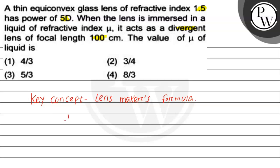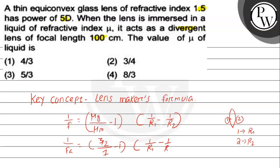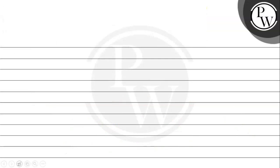1 by F equals... 1 by R1, 1 by R2, radius of curvature of lens, surface 1, surface 2. In the medium, this equals 3 by 2, so minus 1, 1 by R1 minus 1 by R2. This is equation number 1.